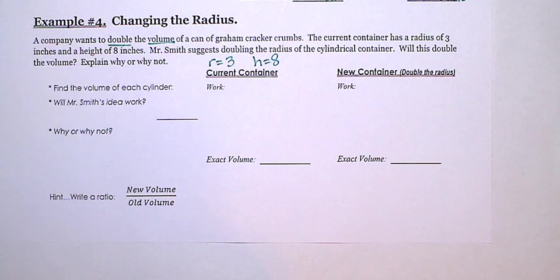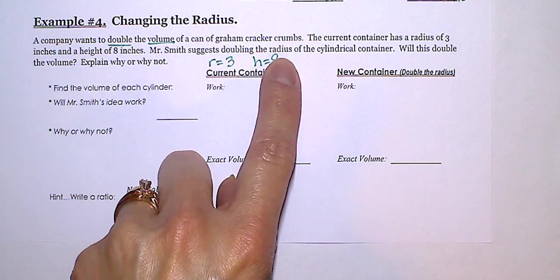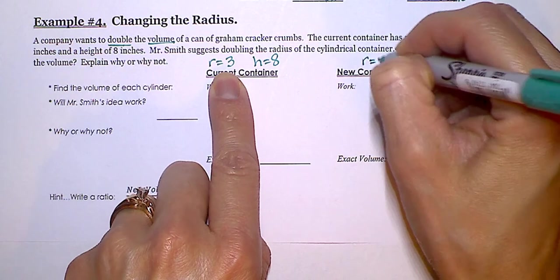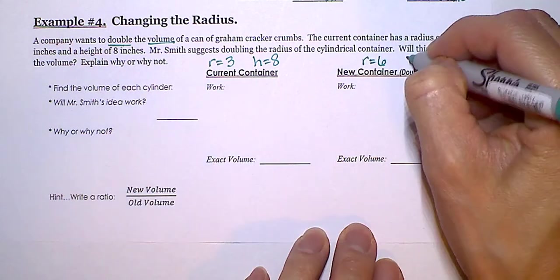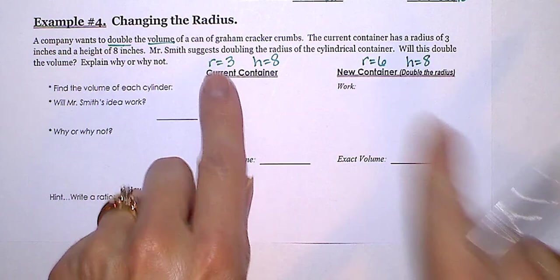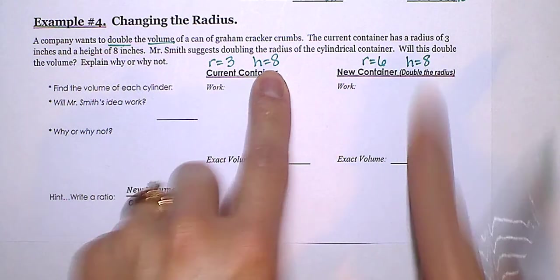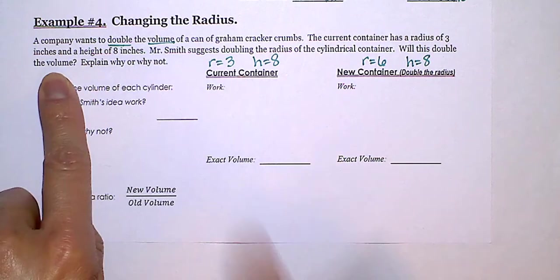Mr. Smith suggests doubling the radius, so we want to double the radius, which is 6, but we're going to keep the same height. So he thinks if we double the radius and keep the same height, that this will double the volume.